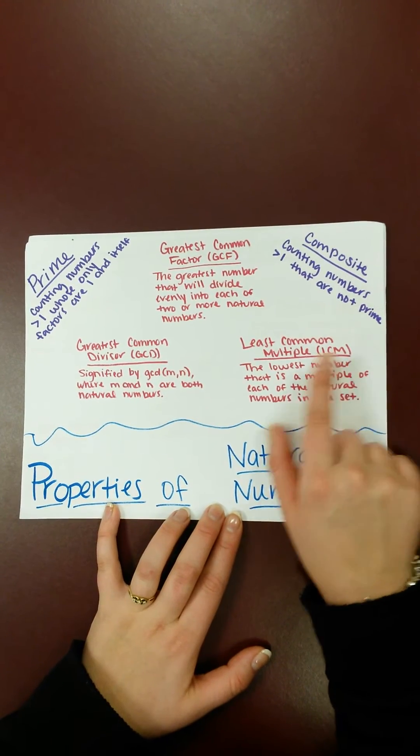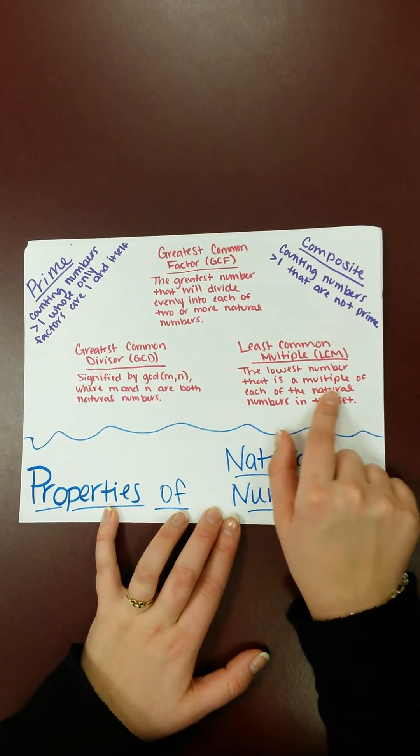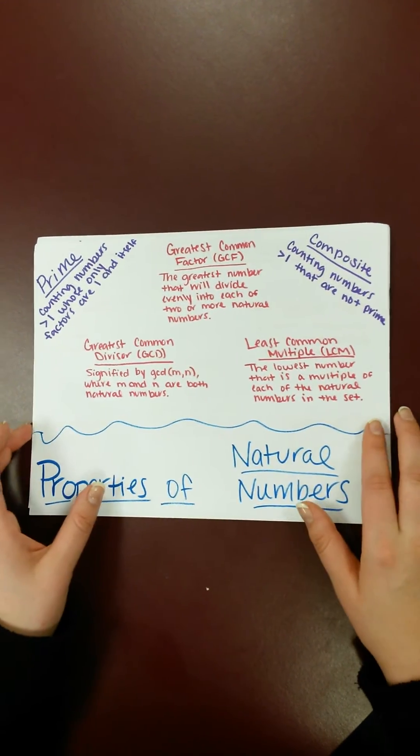Least common multiple, or LCM, is the lowest number that is a multiple of each of the natural numbers in the set.